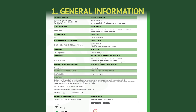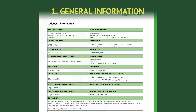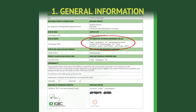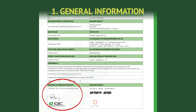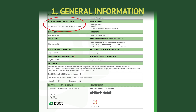Moving on, you'll find further details regarding the EPD, including information such as the thickness or weight of the product and the product classification. You can also find the declared unit, which will be explained later. The page includes the name of the consultant who performed the life cycle assessment study, the verifier who reviewed and approved the EPD, and the programme operator, EPD Ireland. It also indicates whether the EPD applies to a single product, multiple products, or represents an average of similar products, and includes the standards the EPD complies with, such as product category rules (PCR) and EN 15804.